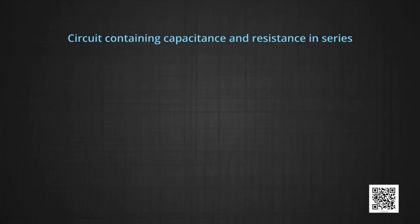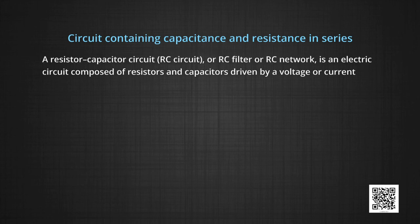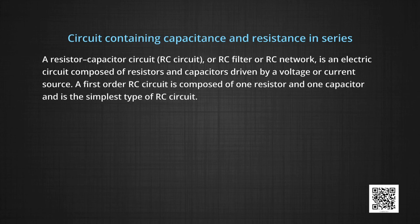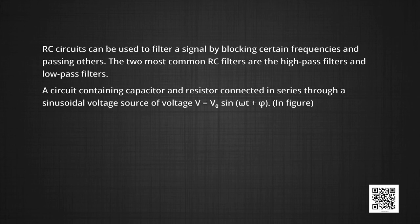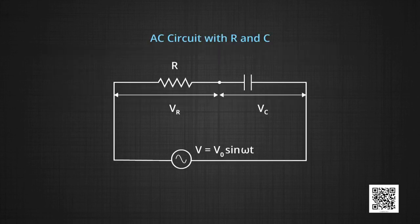Here we will discuss a circuit containing capacitance and resistance in series. A resistor-capacitor circuit, RC circuit or RC filter circuit or RC network, is an electric circuit composed of resistors and capacitors driven by a voltage or current source. A first order RC circuit is composed of one resistor and one capacitor and is the simplest type of RC circuit. An RC circuit can be used to filter a signal by blocking certain frequencies and passing others. The two most common RC filters are the high-pass filter and low-pass filter. The figure shows a circuit containing a capacitor and resistor connected in series through a sinusoidal voltage source V = V naught sin(ωt + φ), showing how the AC source is connected with R and C in series.